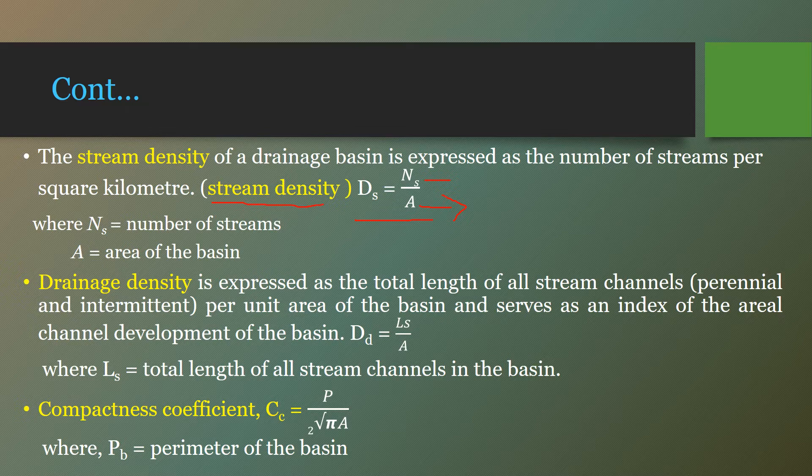Drainage density is the ratio of total length of all streams of the catchment divided by its area. The total length of all streams in the watershed area divided by its area gives the drainage density. The last parameter is the compactness coefficient.